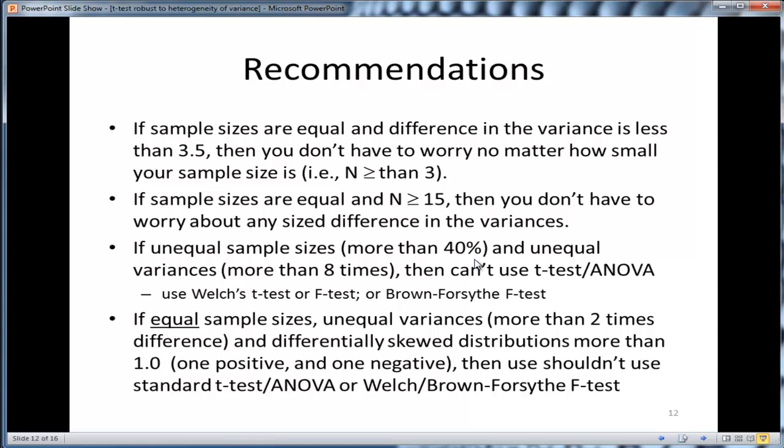Now, if your sample sizes are equal and you have unequal variances, more than two times difference, and differentially skewed distributions, that is, one distribution is positively skewed and one is negatively skewed, then you shouldn't use the standard t-test, ANOVA, or even the Welch-Brown test. They all break down. This differential level of skew is very serious, but I hope you don't come across that in practice.